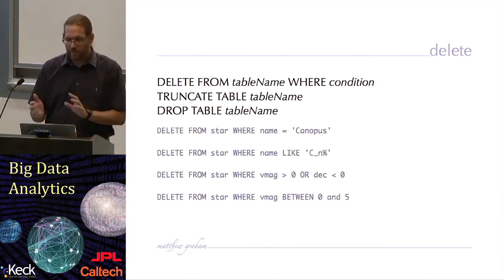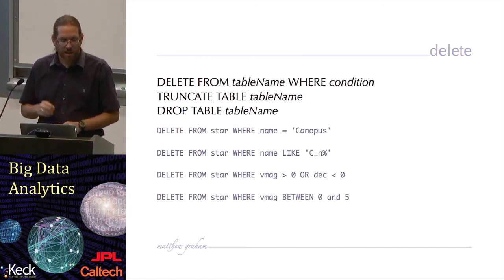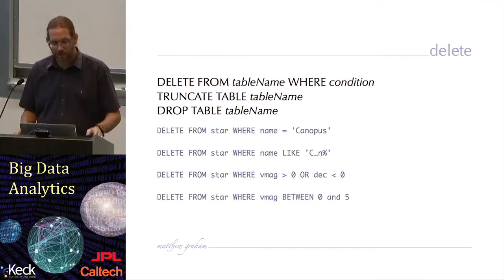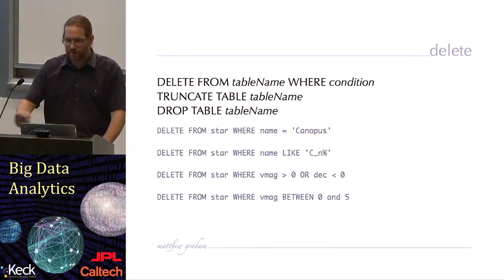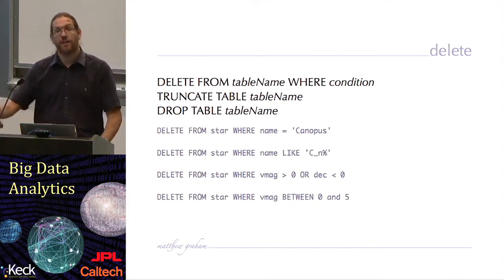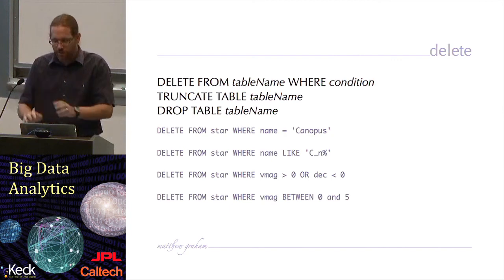If I want to get rid of information, I can do a delete statement: delete from table name where some condition is specified. If I want to get rid of all information in the table but keep the table empty, I would do truncate table name. If I want to completely get rid of the table and all its contents, then I drop the table. The first example — delete from star where name is Canopus — will just get rid of that row. I can also delete using the like construction in the where predicate, a Boolean construction, or the between construction to specify a range of V magnitude values.